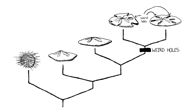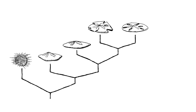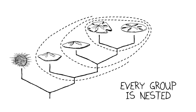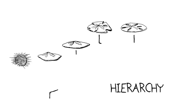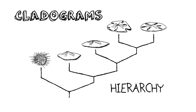This is another critical thing to recognize about the tree of life: every group is nested or included within another group. Nature is a hierarchy that can be represented by these branching diagrams, known as cladograms or phylogenetic trees.